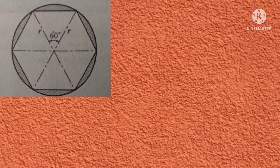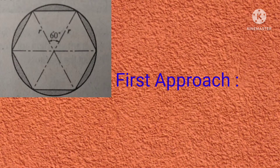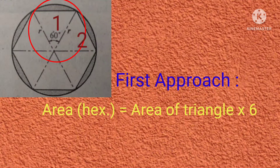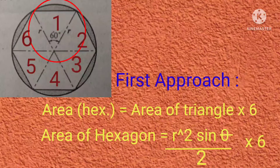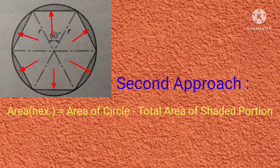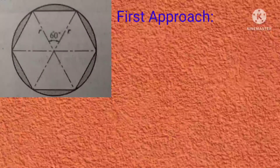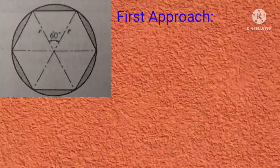If we examine the figure carefully, we might think of two approaches in solving this problem. First, we might consider solving the area of one of the triangles inside the hexagon and multiply it by 6 to get the area of the hexagon. The second approach is computing the area of the shaded segment of the circle, multiplying it by 6 to get the total shaded area, then subtracting that from the area of the circle to get the area of the hexagon. We will try both approaches and see if we get the same answer.